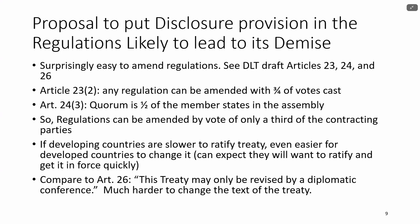Another proposal that has been made is to have this disclosure provision in the regulations, not in the text of the treaty. And that, if it were agreed to, would likely lead to its demise very quickly. It is surprisingly easy to amend the regulations. Article 23.2 of the proposed DLT states that any regulation can be amended with three-quarters of the votes cast, but a quorum is only one half of the member states of the Assembly. So the regulations could be amended by a vote of only a third of the contracting parties.